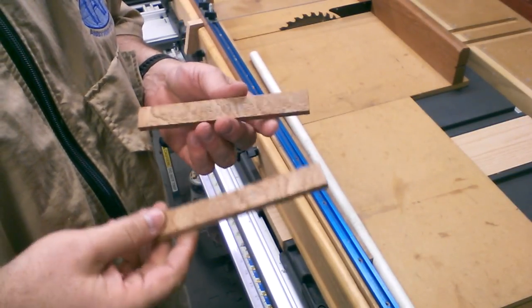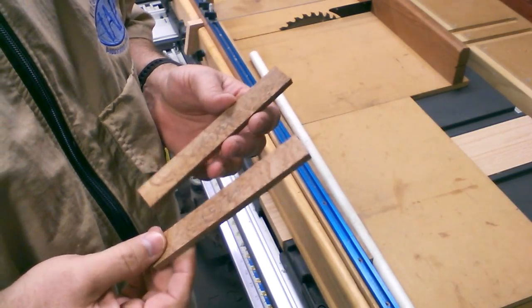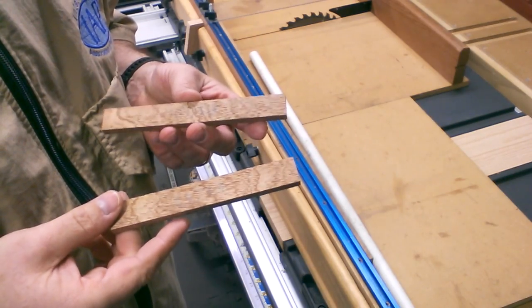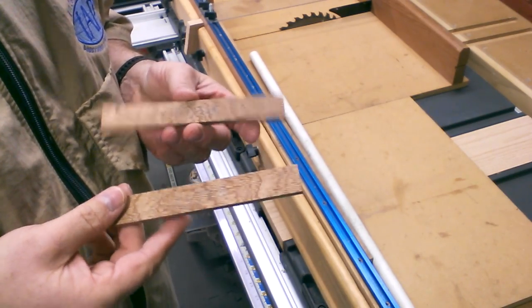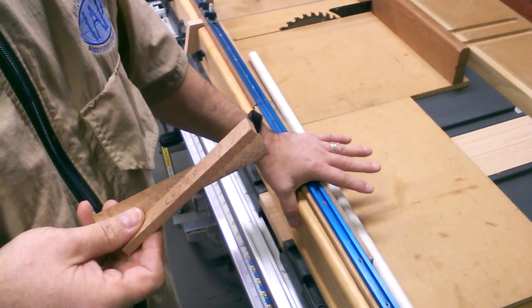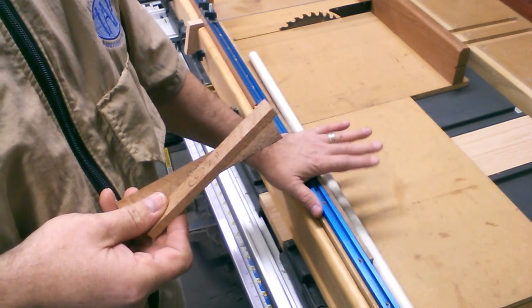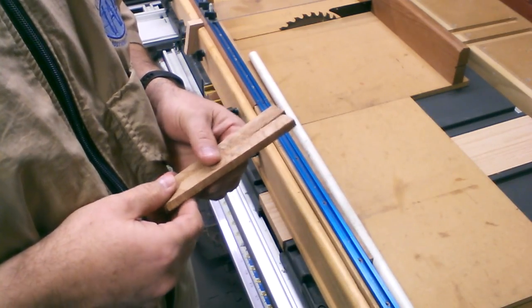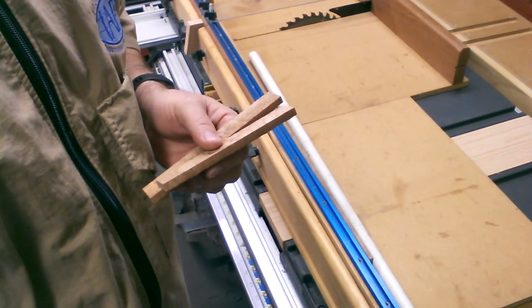I also have two other cheater sticks for two other sets of jaw chuck combos. So I'm going to go ahead and they're different lengths. I'm going to go ahead and cut them out as well because these are going to be interchangeable parts on this gauge, which will make more sense when you see it.